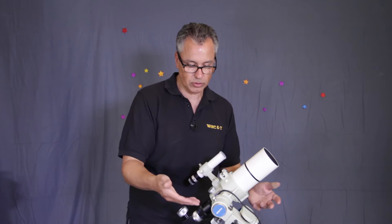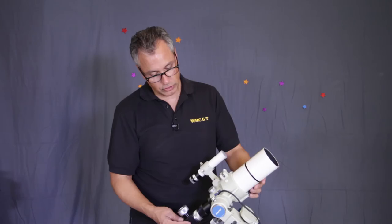There's an altitude clutch, an azimuth clutch here. In this configuration, we have your declination clutch and your right ascension clutch here.